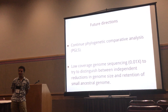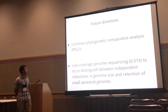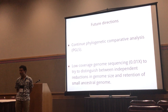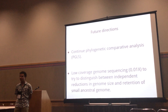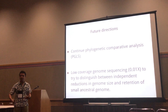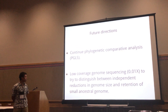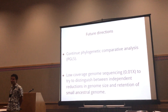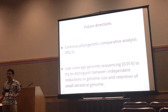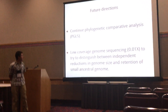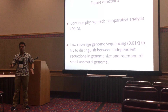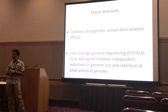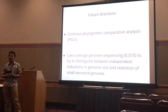For future directions, we want to continue the phylogenetic comparative analysis. We are also going to do low-coverage genome sequencing at about 0.01X of the genome — and mind you, these are huge genomes, so that's still substantial coverage. We are going to try to distinguish between independent reductions in genome size versus retention of small ancestral genomes, and we are very interested in what is happening with the repetitive elements in salamander genomes.